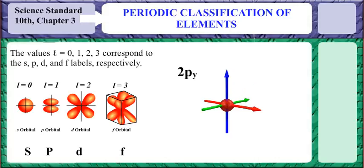The values L equals 0, 1, 2, 3 correspond to the S, P, D, F labels respectively.